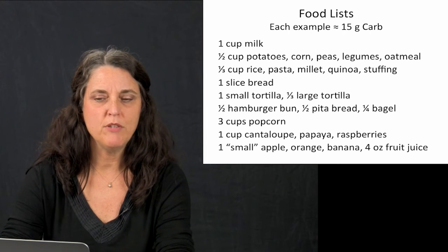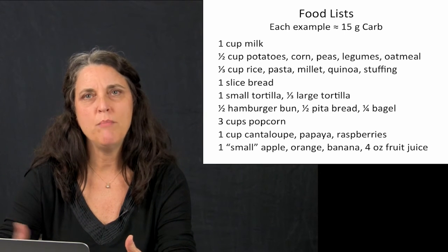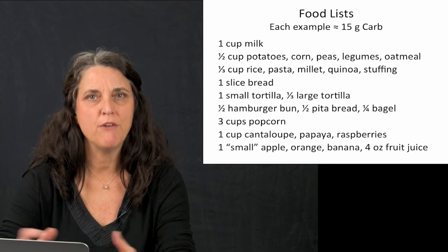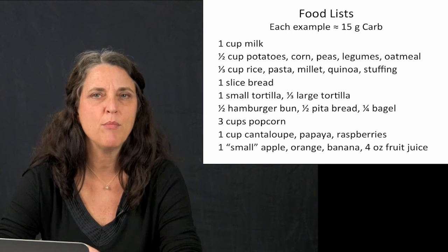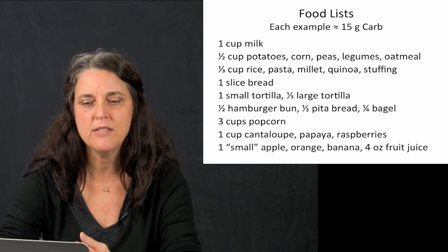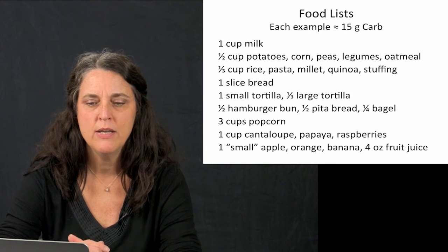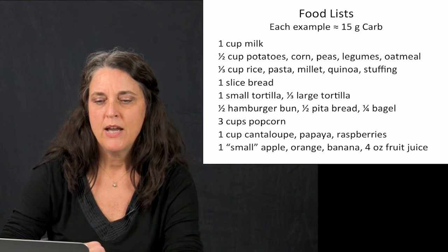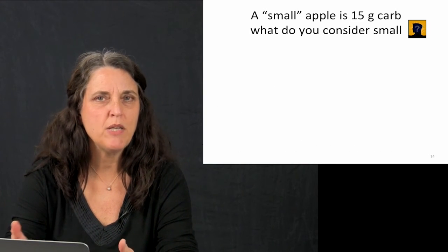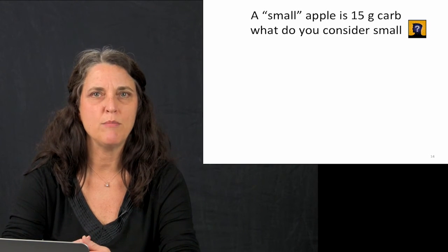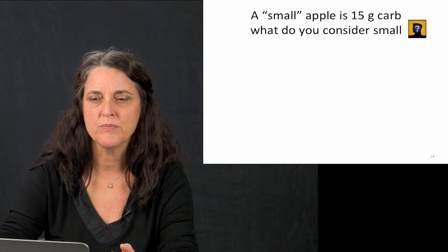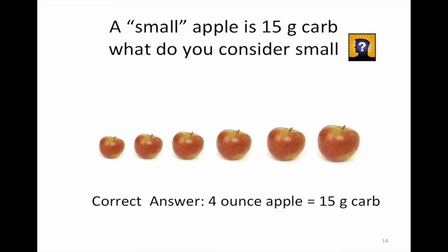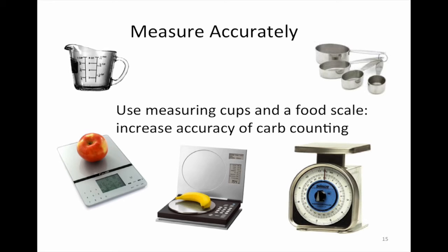Food lists group all milks together, all starches together, all fruits together, and each portion size on the page has about 15 grams of carbohydrate. In time, people learn to memorize the foods they eat day in and day out. You can see some things are bigger portions, like three cups of popcorn, and some things are smaller, such as a small apple, orange, or banana equaling 15 grams of carb. A small apple on these lists is a four-ounce apple, so it's important to measure and weigh things accurately — measuring cups need to be part of the household.